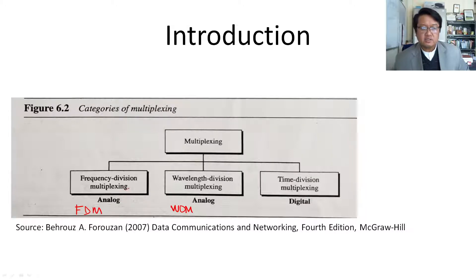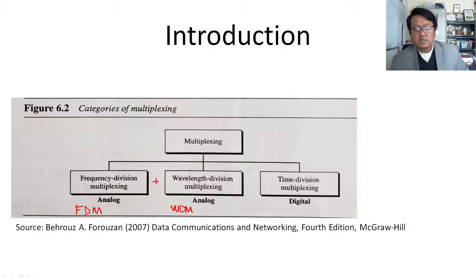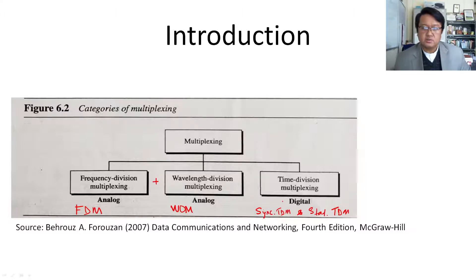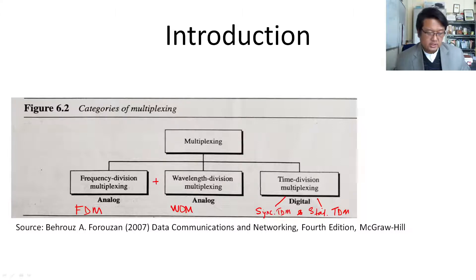FDM and Wavelength Division Multiplexing (WDM) are analog signal multiplexing techniques — that means analog signals are multiplexed. Frequency division multiplexing and wavelength division multiplexing use essentially the same technique. The only difference is that in WDM we are dealing with optical signals. Then we have Time Division Multiplexing, which is used for multiplexing digital signals. There are two types of TDM: synchronous time division multiplexing and statistical time division multiplexing, which we shall deal with in this lecture.